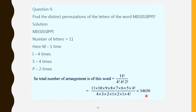So we can form 34,650 distinct words from MISSISSIPPI. This uses the repetition of letters formula: total number of letters factorial divided by the factorial of how many times each repeated letter appears.